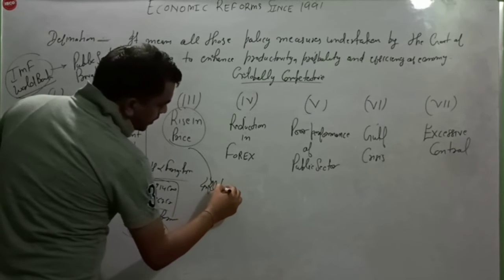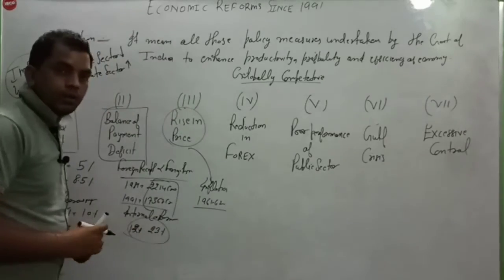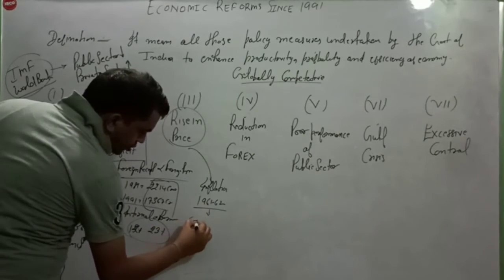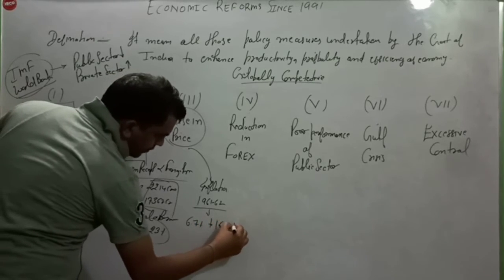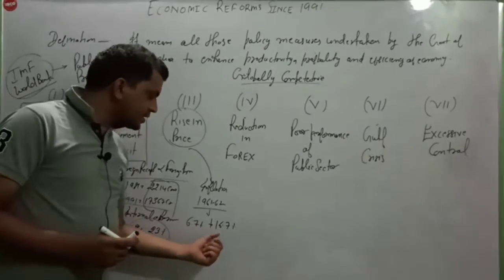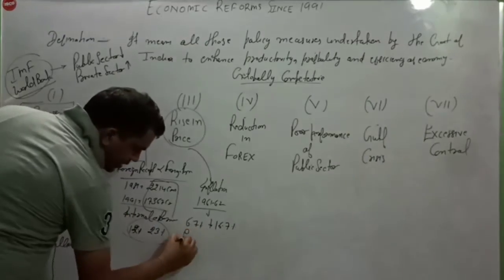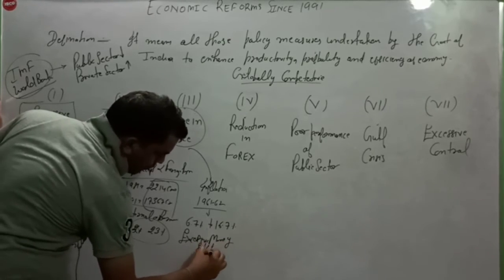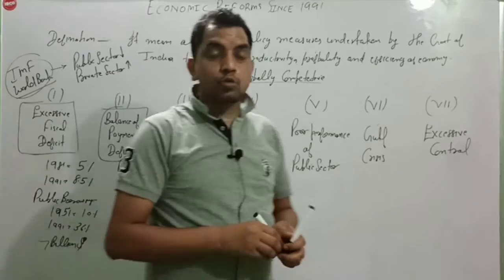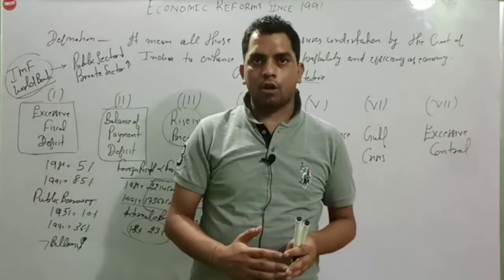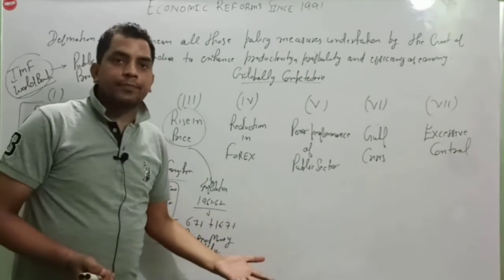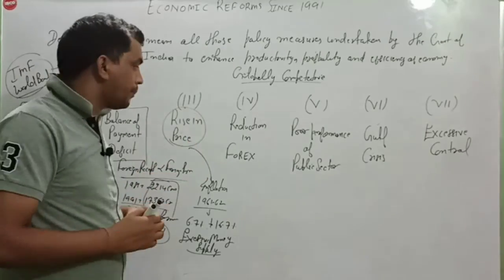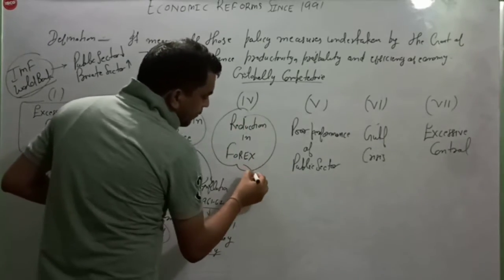Another reason for economic reforms was inflation. Inflation means the onward rise in prices of commodities. Inflation rose from 6.7% to 16.7%. The main reason was excessive money supply in the economy. When money supply increases excessively, the prices of essential goods rise, causing inflation to increase.